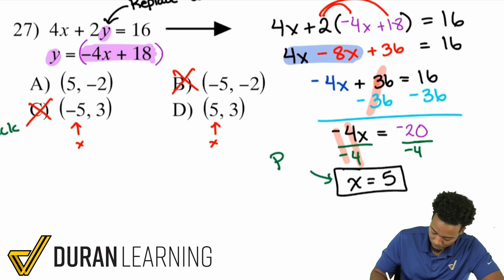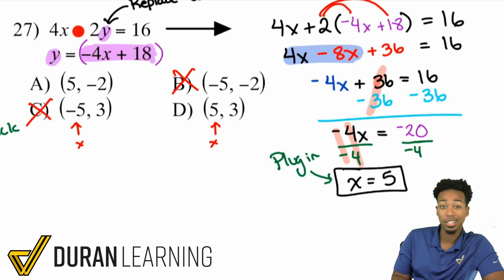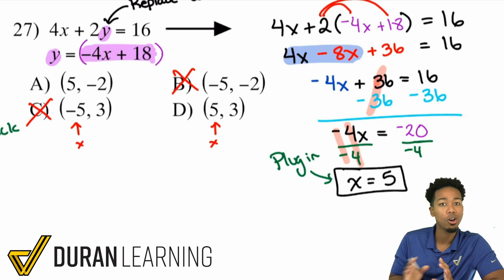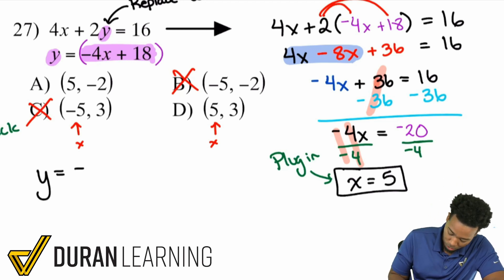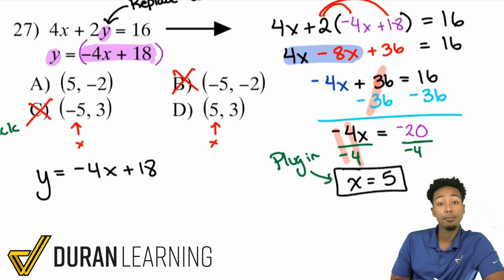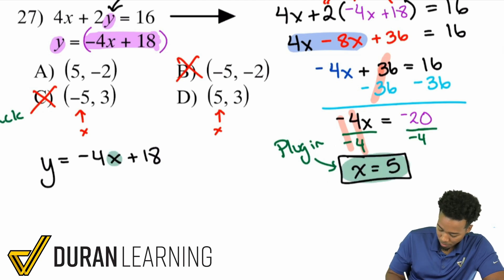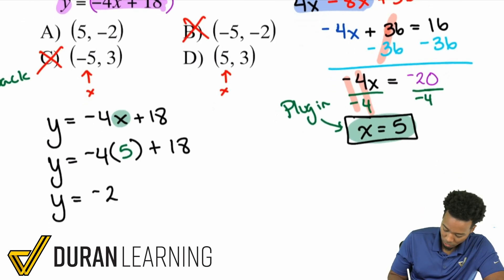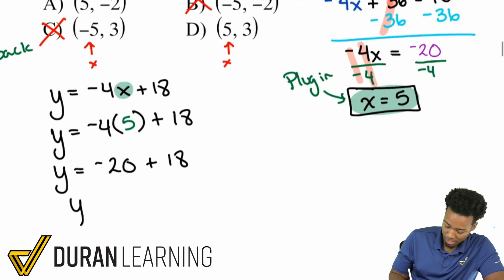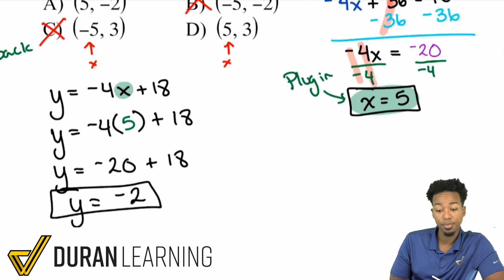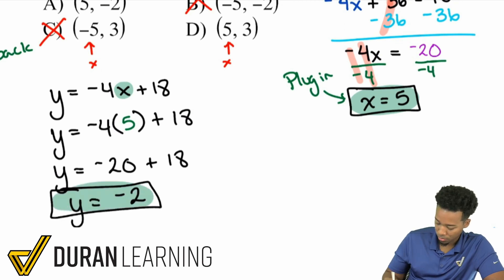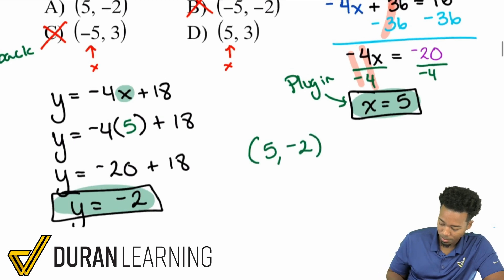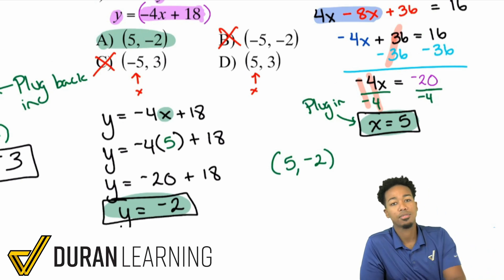Plugging X equals 5 back into the second equation: Y equals negative 4 times 5 plus 18. Negative 4 times 5 is negative 20, and negative 20 plus 18 gives Y equals negative 2. So the final answer is X equals 5 and Y equals negative 2, which means answer A is correct.